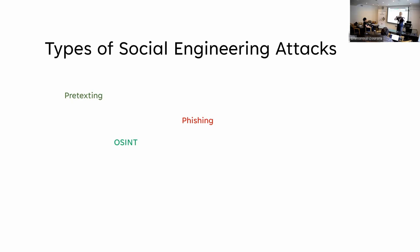Phishing is when you send emails to people, either getting them to click on a link or install software. You send these out to millions and millions of people. The success rate is typically around 0.0002% — roughly one in 50,000 — but it's still a good business because it costs roughly a dollar to send a million verified emails. That's a scale attack.